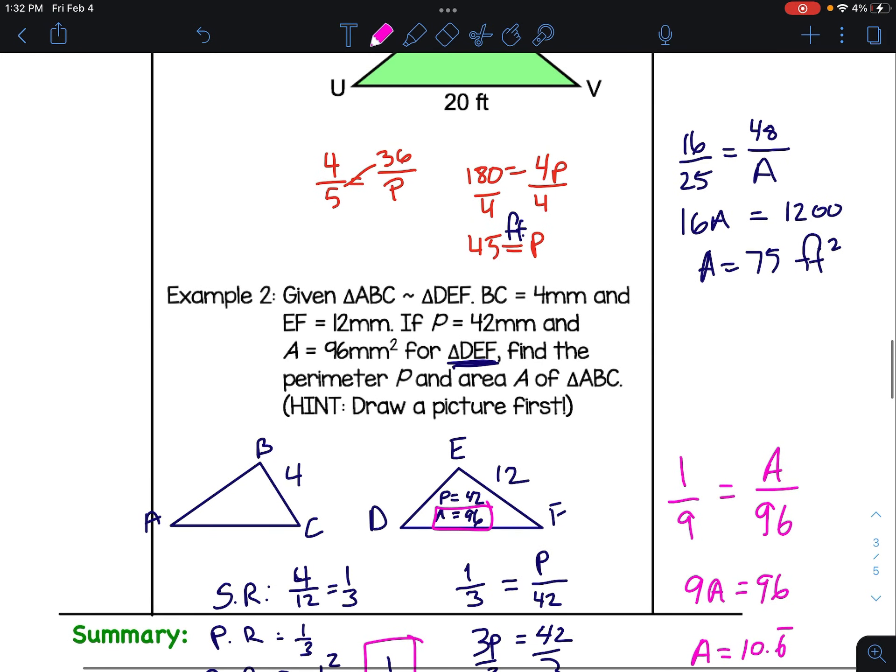So the big thing with this is find the similarity ratio, find the perimeter ratio, find the area ratio. That's the hard part. Then you set up proportions with the perimeter and the perimeter ratio to find the second perimeter. Again, same thing. Area ratio, area of one of the shapes, find the area, set up proportion, cross multiply, divide. Have a good day.